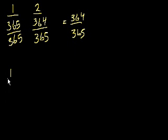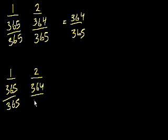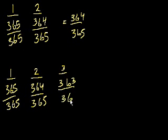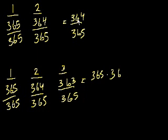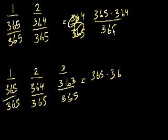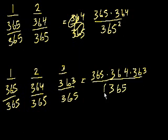Now what if we had three people? The first person could be born on any day. The second person has 364 possible days out of 365. The third person — what's the probability they aren't born on either of the first two people's birthdays? Two days are taken up, so the probability is 363 over 365. So for three people, the probability is 365 times 364 times 363, all over 365 to the third power.